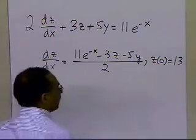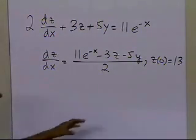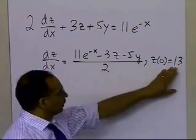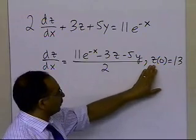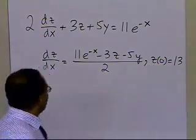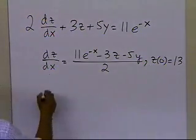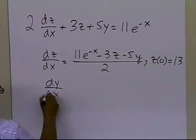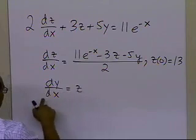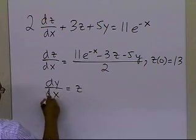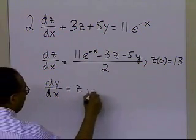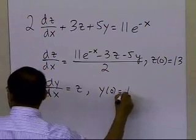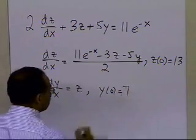The second differential equation, coupled with the first, is dy/dx = z, with initial condition y0 = 7.